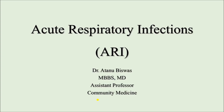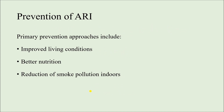So far we have discussed the classification and management of acute respiratory infections in under-5 children, but it is always better that we prevent the occurrence of the disease rather than manage it. So in today's video we are going to talk about the prevention of acute respiratory infections. Prevention, especially primary prevention, includes approaches like improved living conditions, better nutrition, and reduction of indoor smoke pollution.